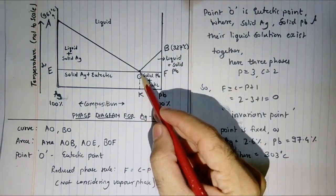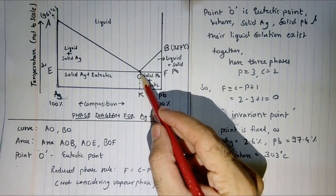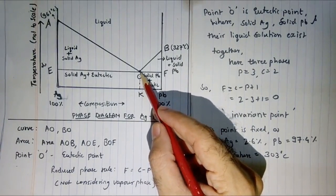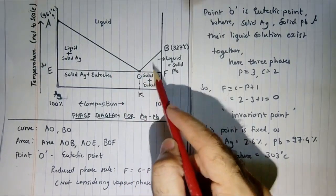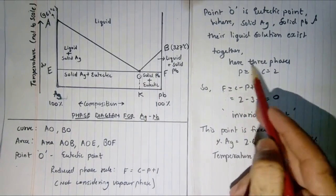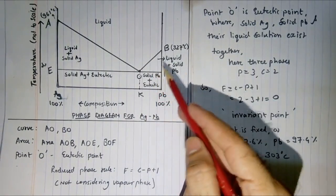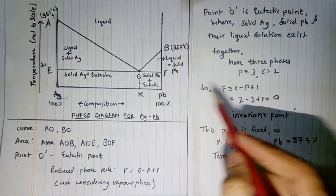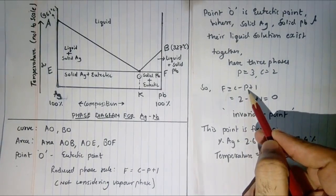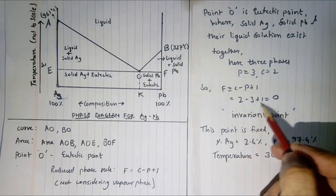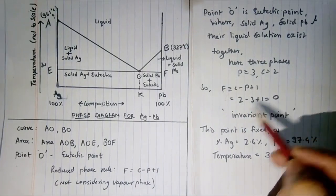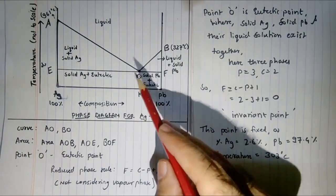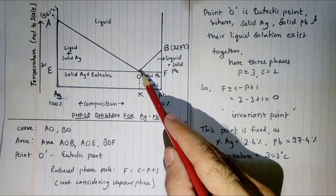Now, point O is very interesting. Here, three phases exist together: the liquid mixture, solid silver, and solid lead. The number of phases is 3, and the number of components is 2. Applying the reduced phase rule: f = 2 − 3 + 1 = 0. This is an invariant system — this point is completely fixed and you cannot change it.